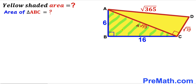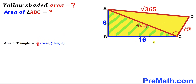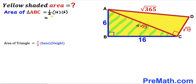Now let's calculate the area of triangle ABC. Using the formula Area = ½ × base × height, the base is 16 and the height is 6. So the area of triangle ABC = ½ × 16 × 6 = 48 square units.